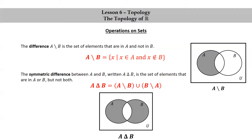Here's a Venn diagram representing the symmetric difference of A and B. Notice that we shade only the portions of A and B that do not include the other one. So we have shaded A minus B and we've shaded B minus A, but we left the intersection of A and B blank, unshaded.